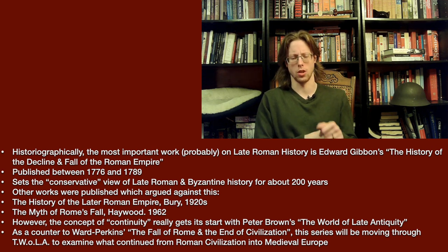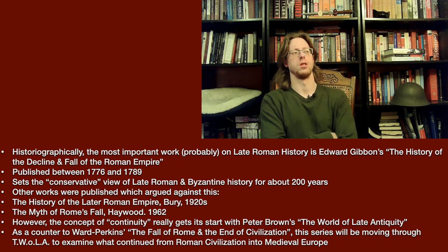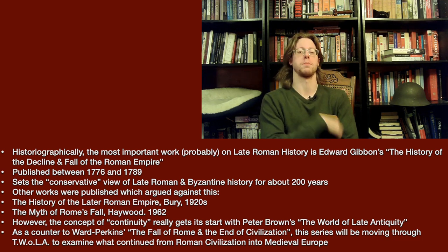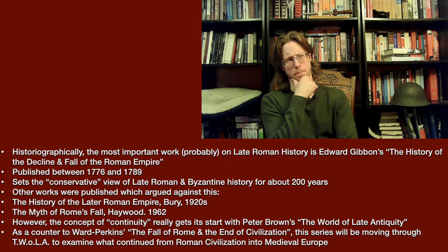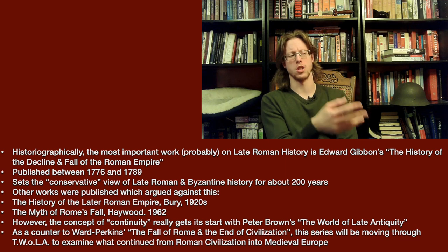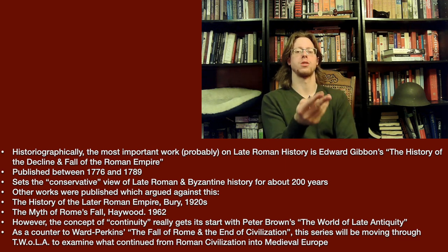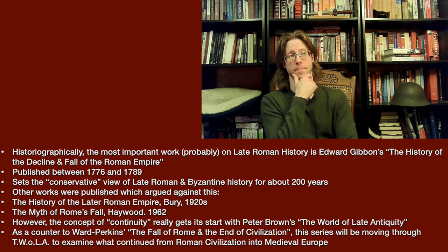To do that, the first thing we have to do is talk a little bit about some of the historiography for this. Historiographically, the most important work, probably, on the late Roman Empire ever written is Edward Gibbon's The History of the Decline and Fall of the Roman Empire. It was published between 1776 and 1789, so roughly contemporaneous with the events of the American Revolution — just throwing that out there so you all get an idea of when this thing was really getting put out.